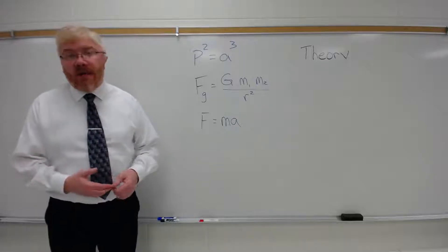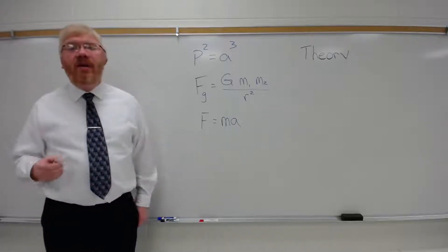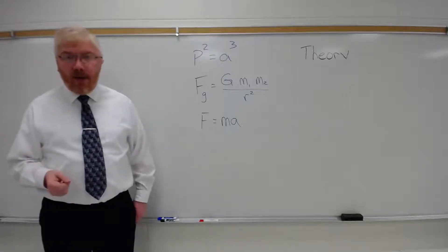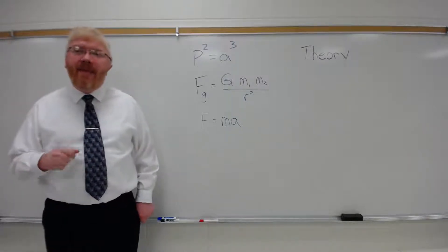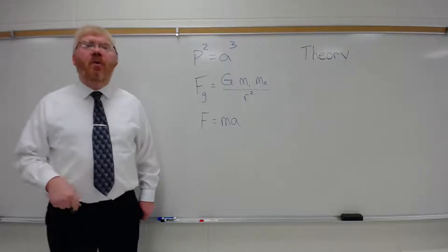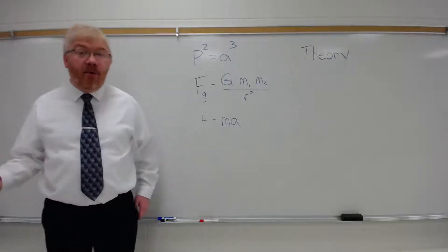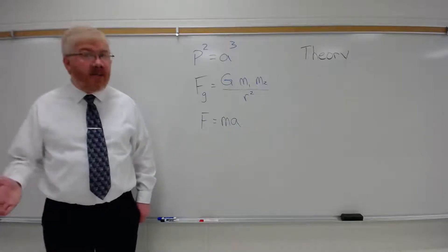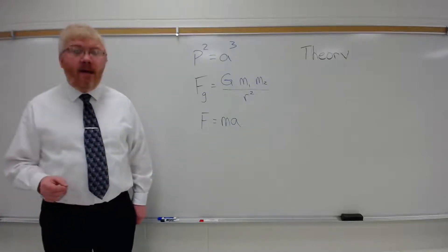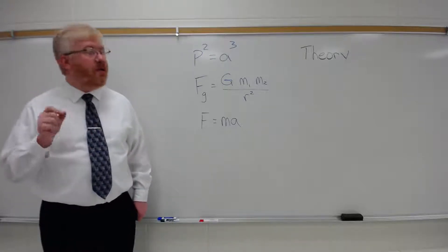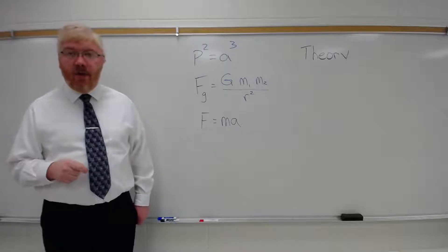For example, Einstein's theory of relativity has many, many predictions in it. One being the famous E equals MC squared. But there are other equations in that theory. There is no law of relativity, not because it hasn't been proven. It's been shown to be correct for the last 100 years, every test we've thrown at it. But it cannot be represented as a simple mathematical equation. Therefore, it is not considered a law. But it is the best we can do in science. It is a theory.